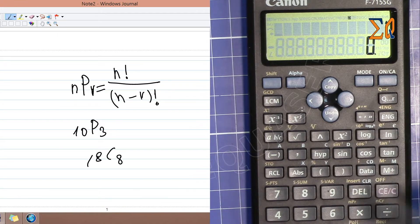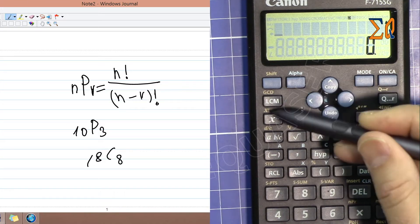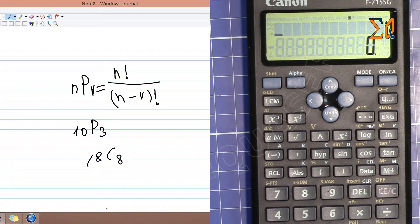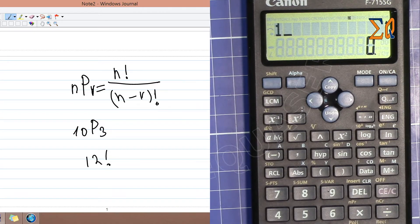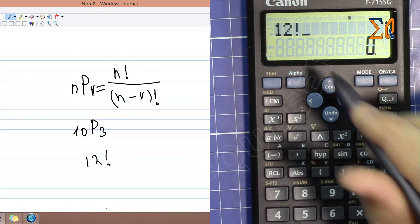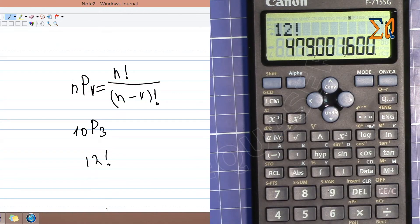For factorial, the factorial button is with shift. Let's say you want to do 12 factorial. Press 12, then press shift, and then factorial. This is the 12 factorial result.